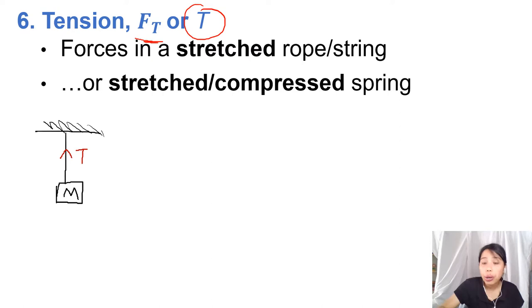If you want to think of compression, it's kind of hard with ropes because if you compress a rope, it just goes slack. So if you want to think of compression, you can think of metal rods. Or as you will see in a future chapter, you can think of springs.